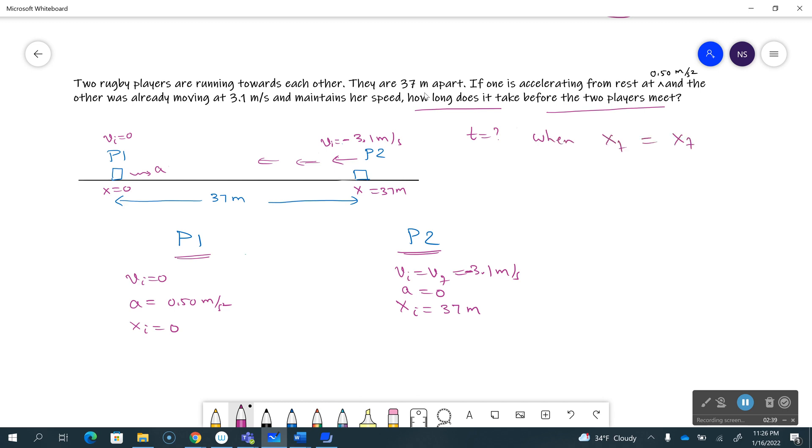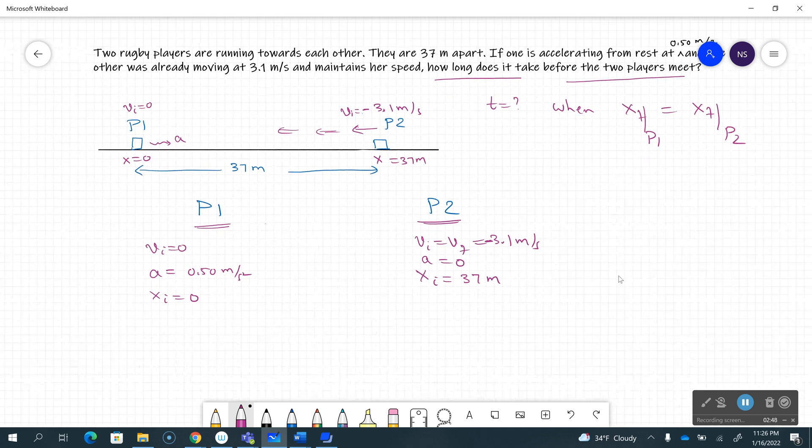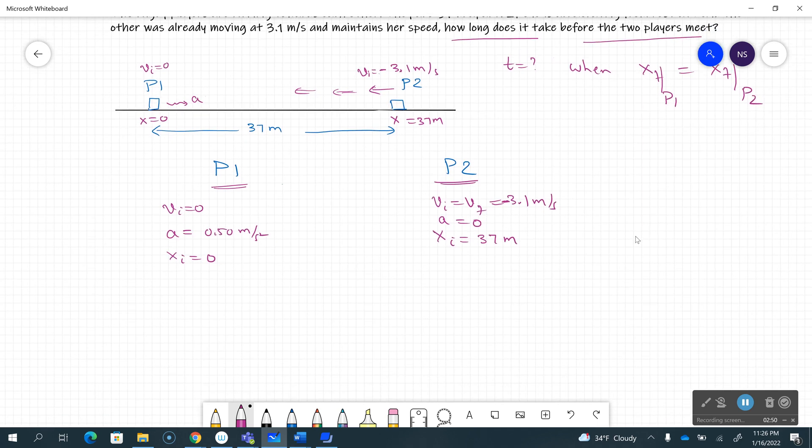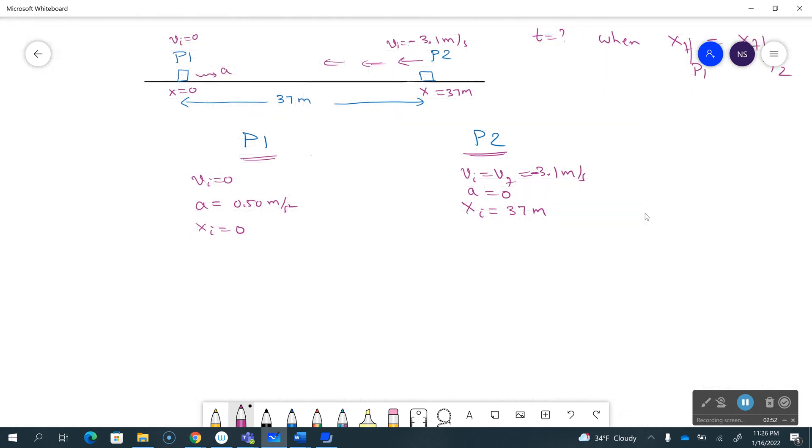So what I'm going to do is use the equation for position as a function of time, that's the second kinematic equation, except I'll write it as xf equals xi plus vi*t plus one half a*t squared. I write the same thing for player two: xf equals xi plus vi*t plus one half a*t squared.